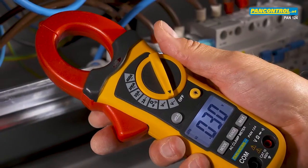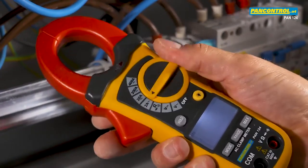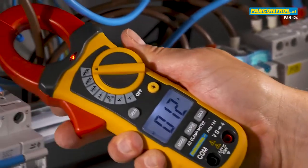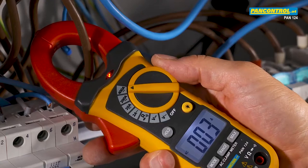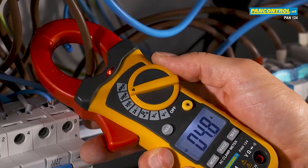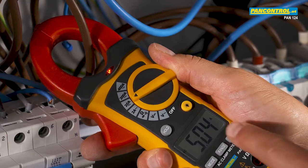When measuring unknown amperage, the highest range should be selected. When the displayed value appears too small, a lower range should be selected until the highest resolution is achieved.